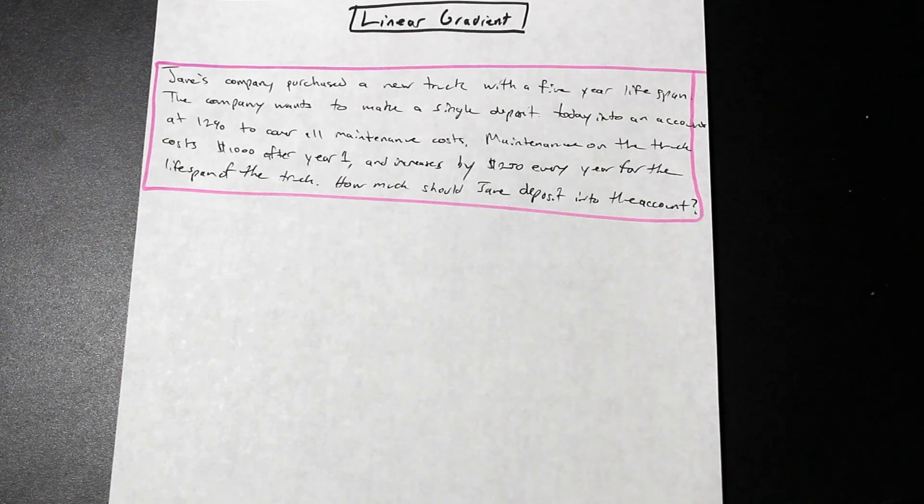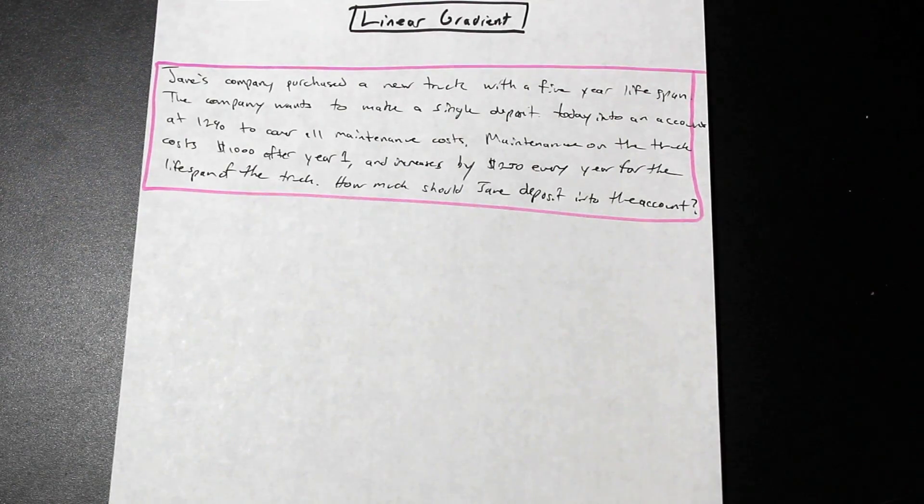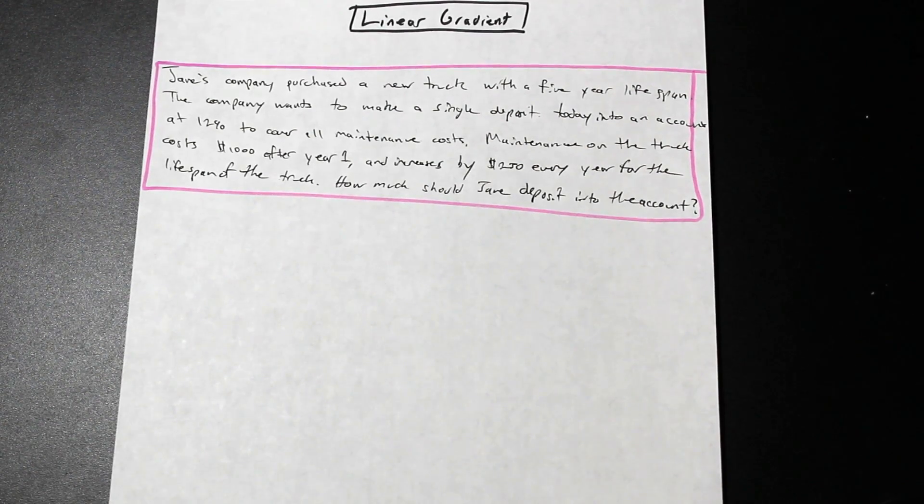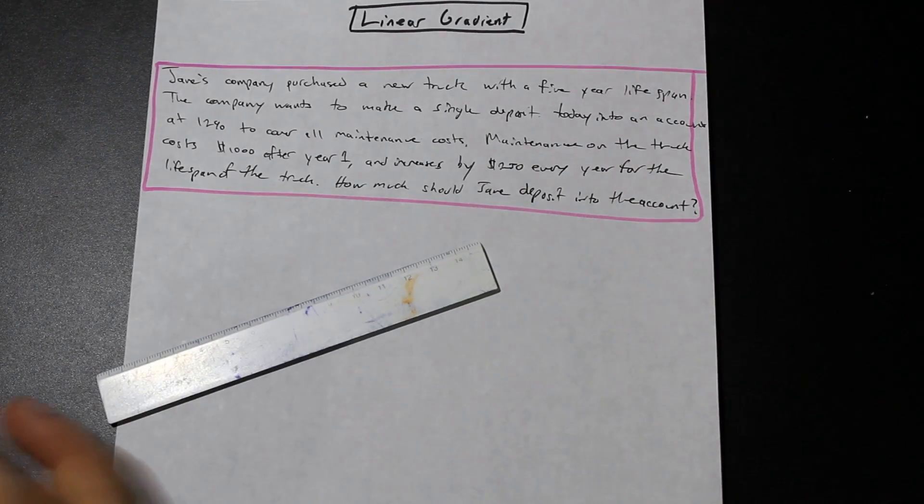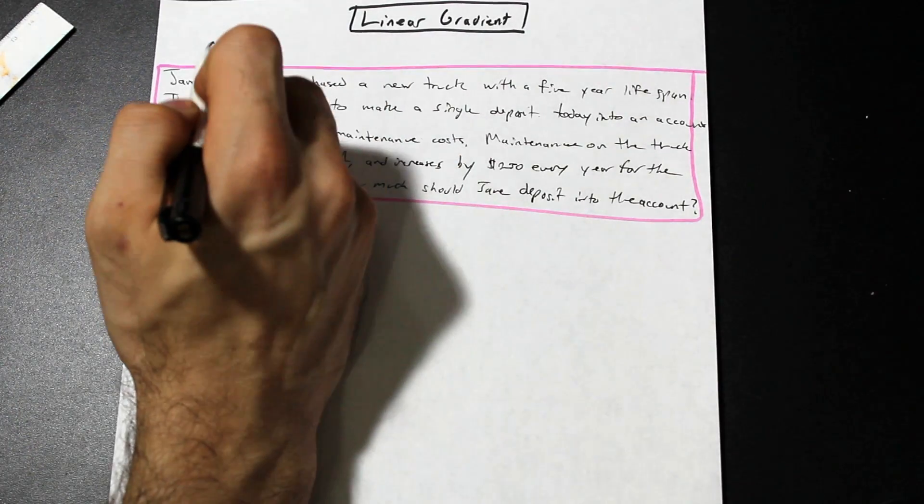So I just wrote the question out here, and it's a fairly long question, but this is fairly common in this course, so you need to be able to read the question and take the information out of it, because the question's not that hard, but sometimes you can get lost. So the first thing we need to do is translate exactly what is on the paper here in the question into a cash flow diagram.